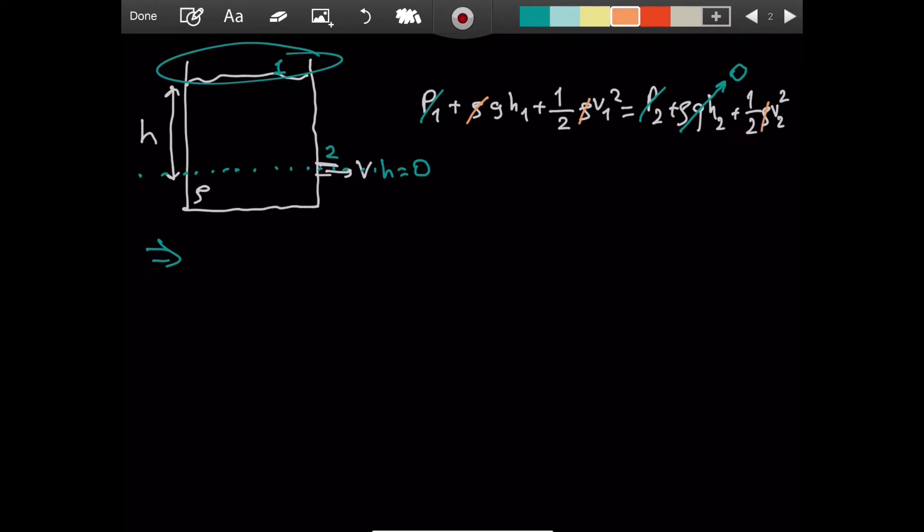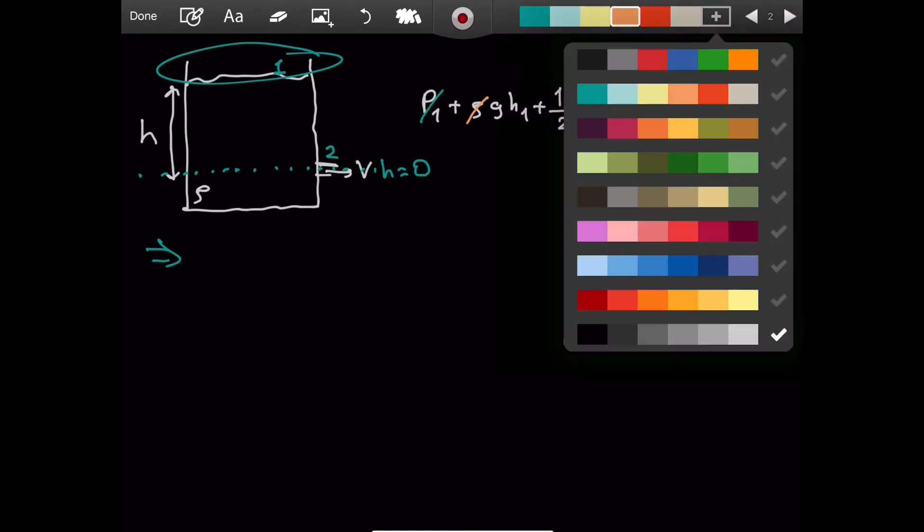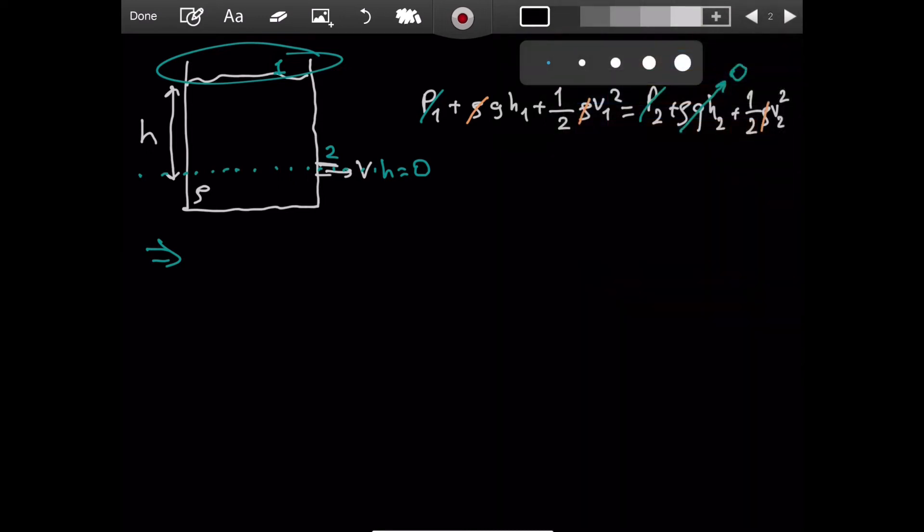Also, notice that rhos cancel. These are gone, which means the type of fluid does not matter. And at the beginning of this video, I insinuated it, right? I said you might have water, soda, milk, anything. But you probably have water in this kind of a thing. This is like a water tower. So if we make that cancellations, and also h1 becomes h when we choose this level as the height equals 0 level.